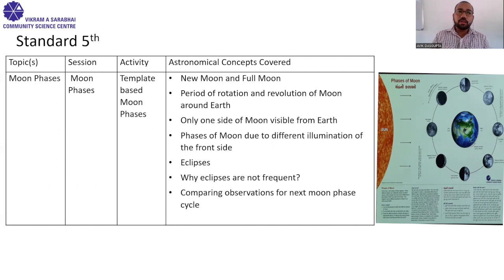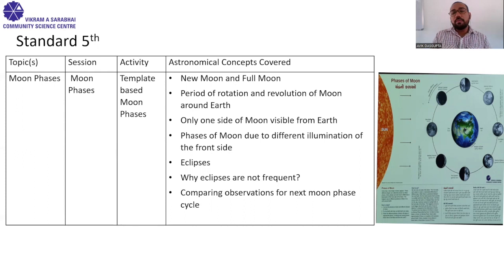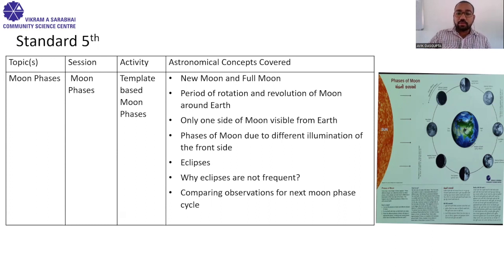In fifth standard, students are exposed to the concept of moon phases — new moon, full moon — and we try to give them an explanation of why moon phases occur. Moon phases are a very common observation, and by fifth grade students confirm they have seen these phases but don't know why. We explain this using demonstrations and activities. Since we are talking about phases, the next topic is eclipses — why eclipses are not frequent, why and when they happen.